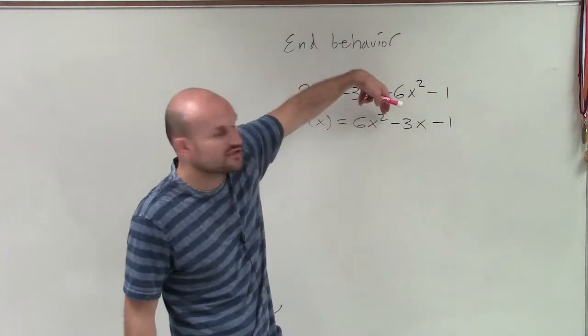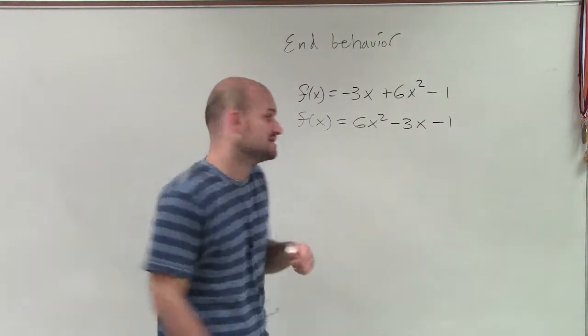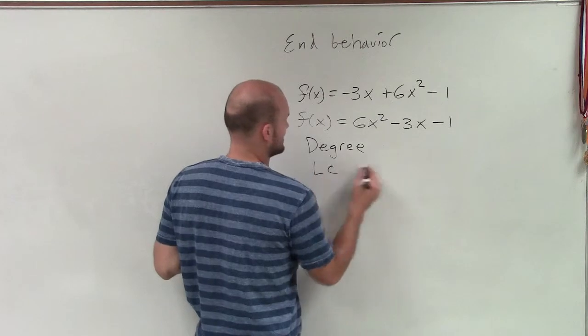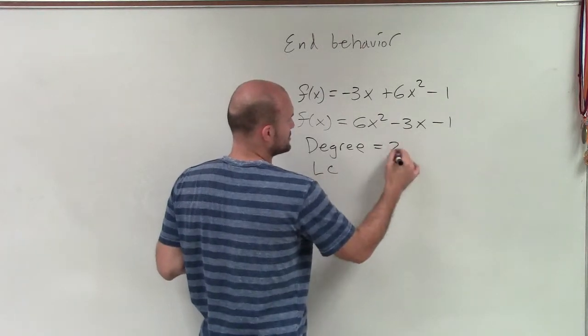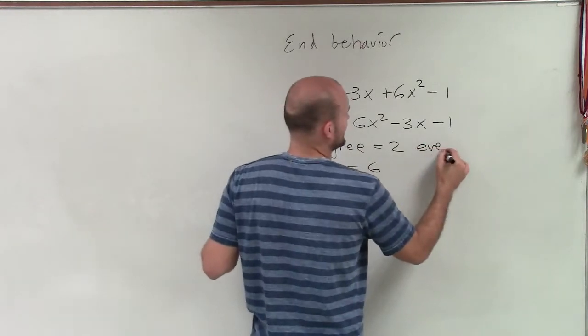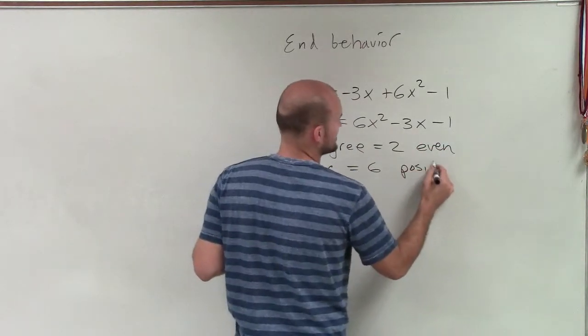So the degree is going to be my exponent 2, and the leading coefficient is going to be 6. Now, what I like to do is when I'm doing problems like this is I'll write out the degree, which is 2, and the leading coefficient, which is 6. And I notice that the degree is even and the leading coefficient is positive.